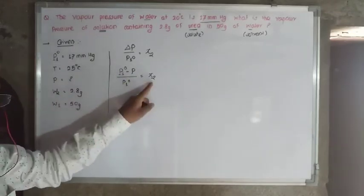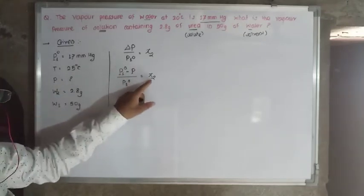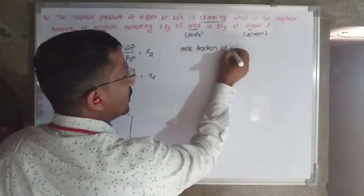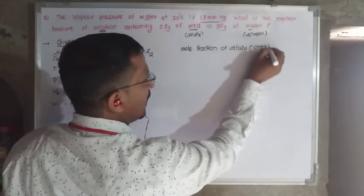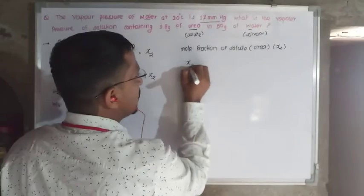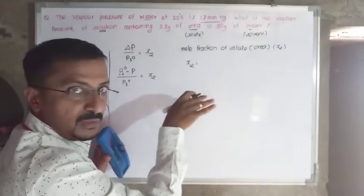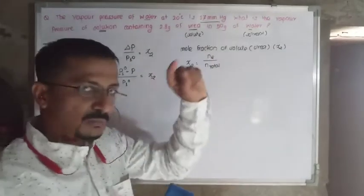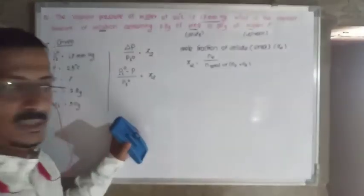P1 naught is given, P is what we need to calculate, and x2 we have to find first. To calculate the mole fraction of solute x2, the formula is: x2 equals n2 divided by n total, which equals n2 divided by n1 plus n2. Here n2 is the number of moles of solute and n1 is the number of moles of solvent — only water and urea are present.